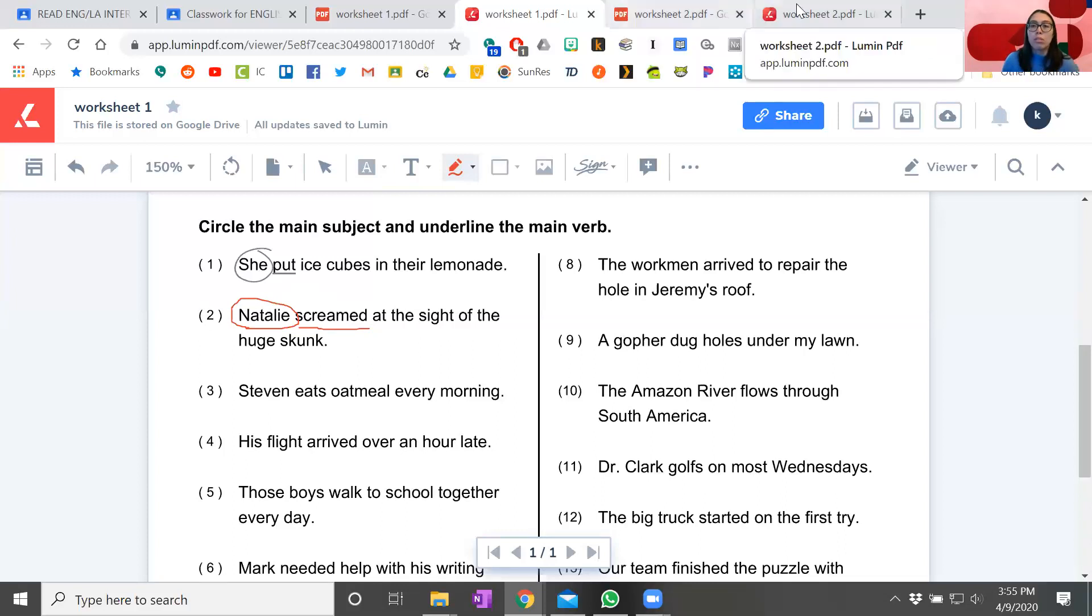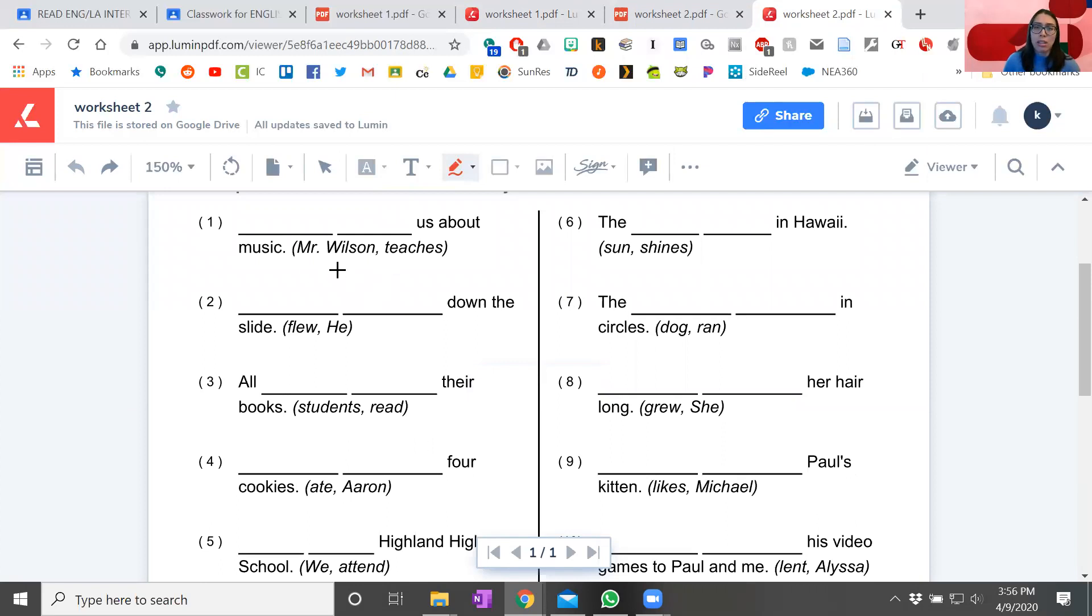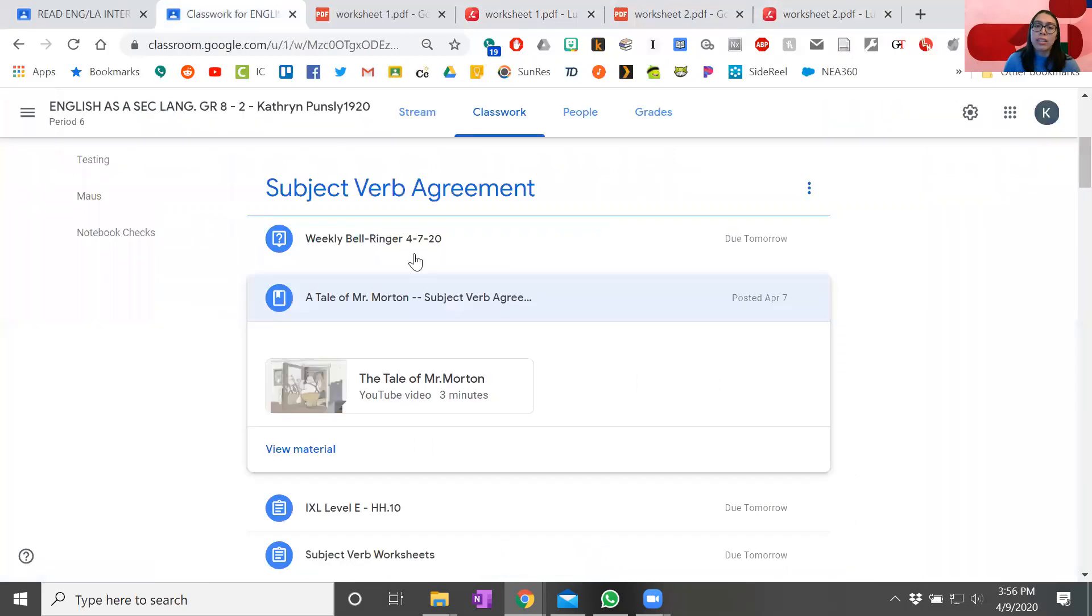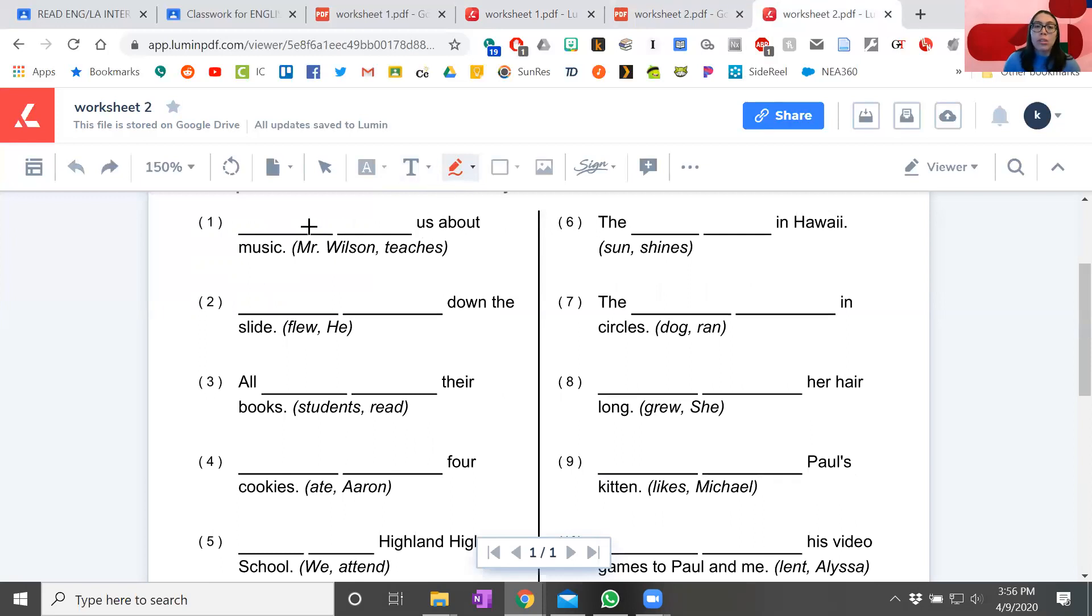So let's take a look at worksheet number two. It should be pretty similar to worksheet number one. You can still put your name and date at the top. But for this one, it gives you the two choices and you have to choose between them. So it's kind of like the IXL. On the IXL, you have a whole sentence and you're trying to put it in order and you're doing the same kind of thing here. So this is blank blank us about music. And we know that Mr. Wilson is going to go in the sentence. We know that teaches is going to go in the sentence. So we know that teaches isn't going to come first in the sentence. It's not going to be teaches Mr. Wilson us about music. That would be kind of weird. We want to put who did it first. So it's going to be Mr. Wilson and then it's going to be teaches because that's going to be what makes the most sense. So the whole sentence is going to be Mr. Wilson teaches us about music.